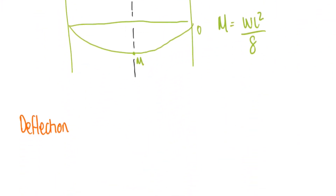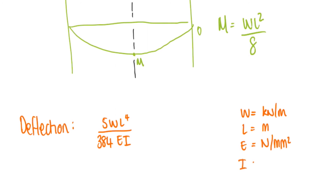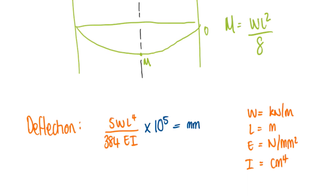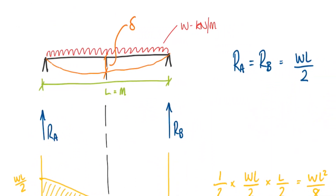The deflection equation for this type of loading situation is 5WL to the 4 over 384EI. W is in kilonewton per metre, L is in metres, E is normally given in newtons per millimetre squared, and I, the second moment of area, is normally given in centimetres to the 4. To avoid having to convert all those units, if you just multiply this equation by 10 to the 5, that will give you your deflection in millimetres, which is normally the value you need. Those are the equations you need for a UDL on a simply supported beam.